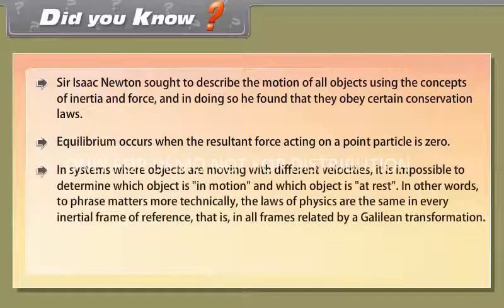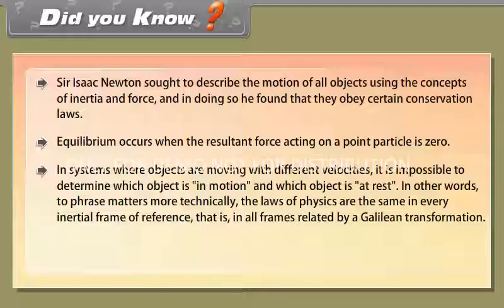In systems where objects are moving with different velocities, it is impossible to determine which object is in motion and which object is at rest. In other words, the laws of physics are the same in every inertial frame of reference, that is, in all frames related by a Galilean transformation.